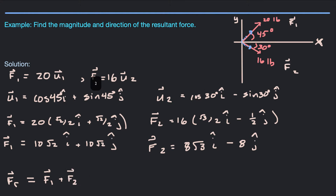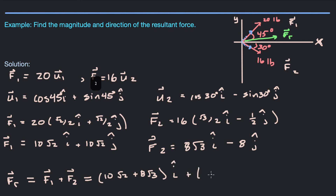Now the resultant force — if we think about it a little bit beforehand to figure out where this force is going to point — we're pulling in the positive x direction both ways, so it should point in the positive x direction somewhere. But it looks like we're pulling up with more force than we're pulling down, so it's probably going to have a positive y component. That's just our preliminary guess. If we add these two vectors together, we add the corresponding components, which gives us (10√2 + 8√3) î + (10√2 − 8) ĵ.